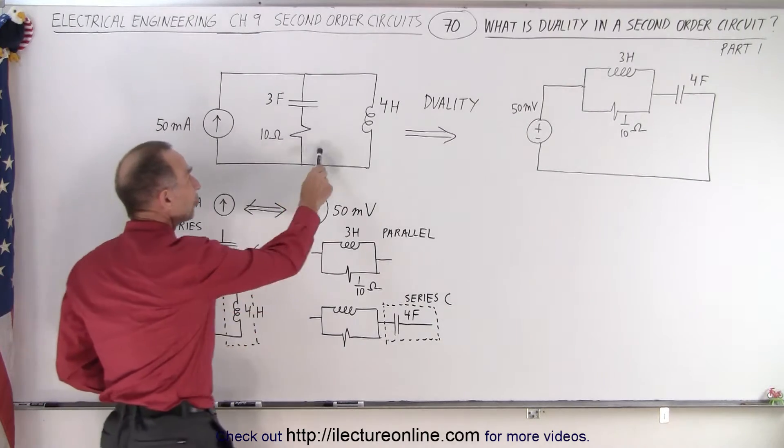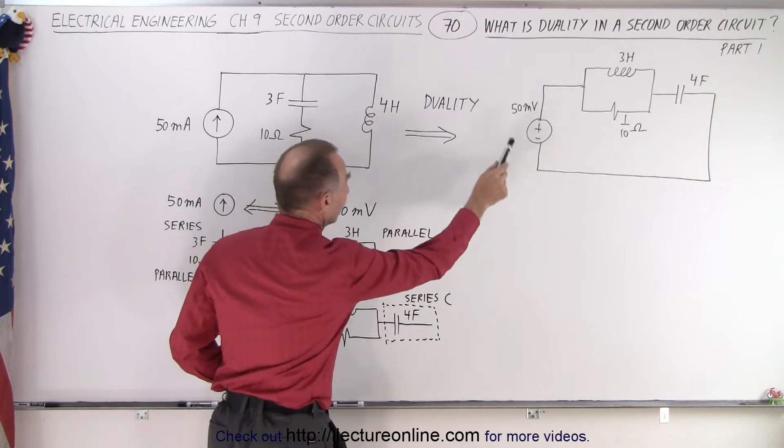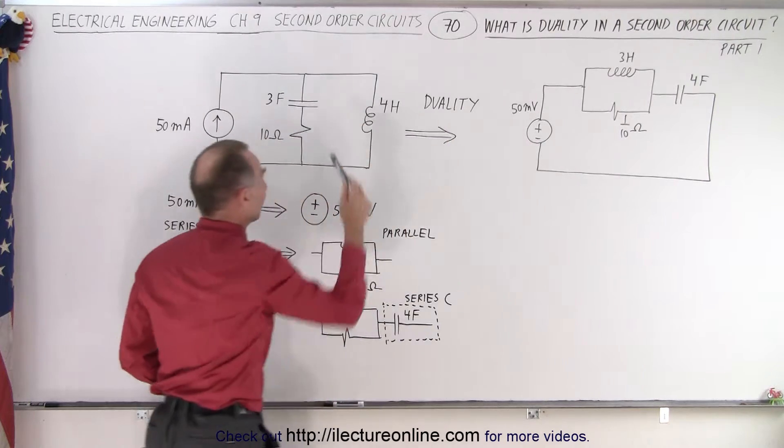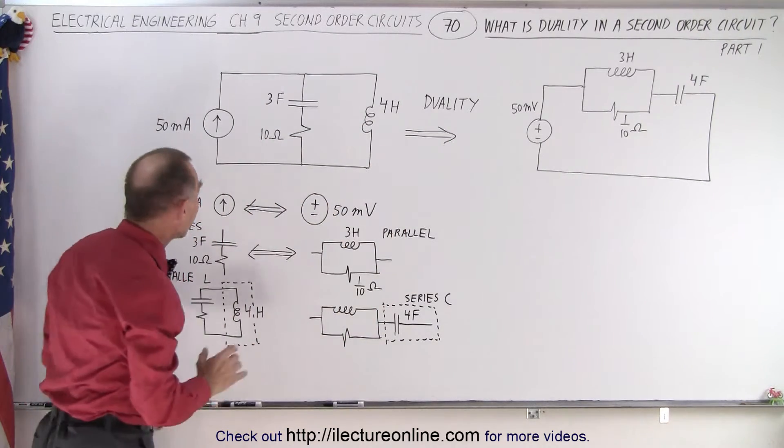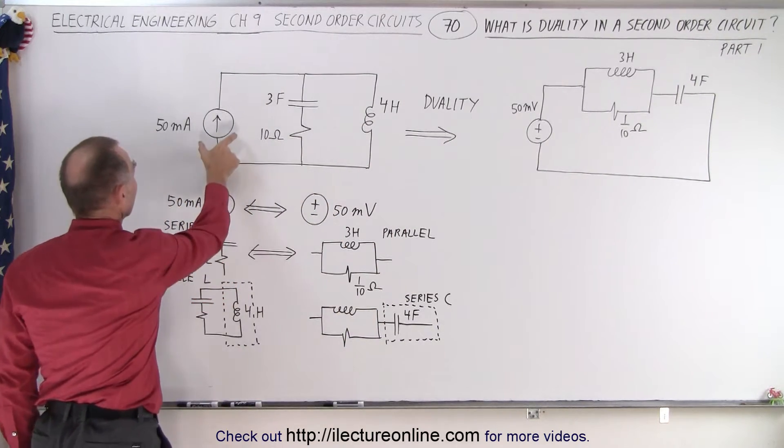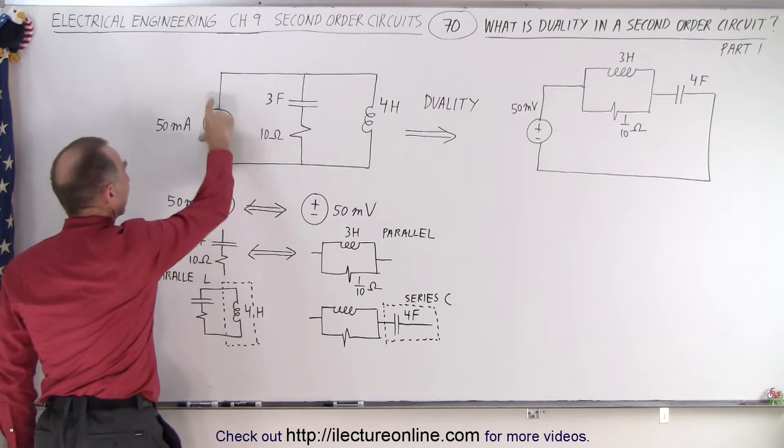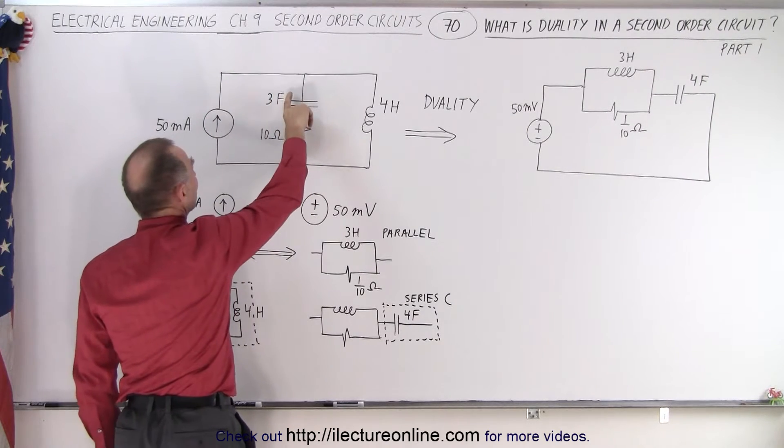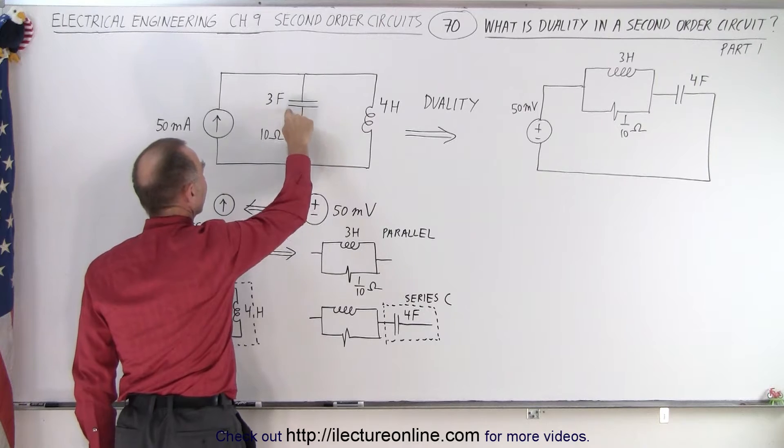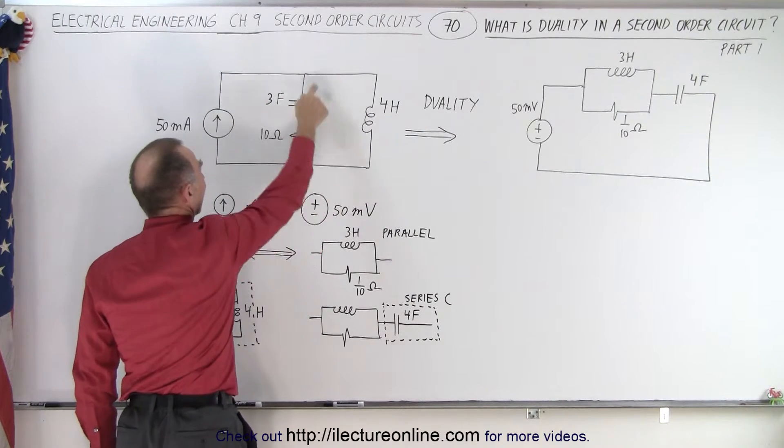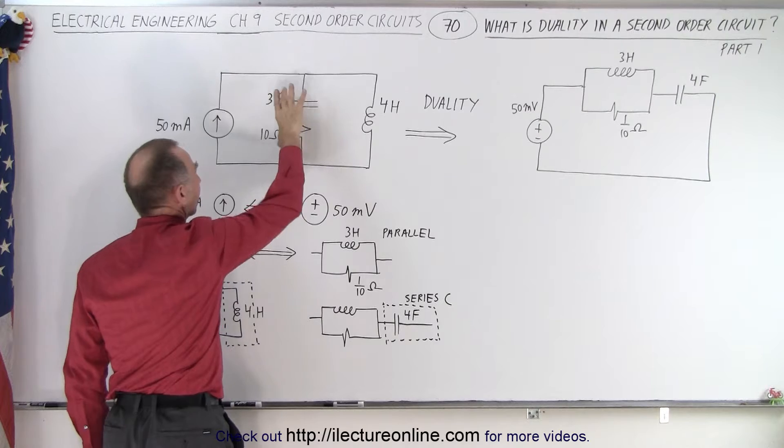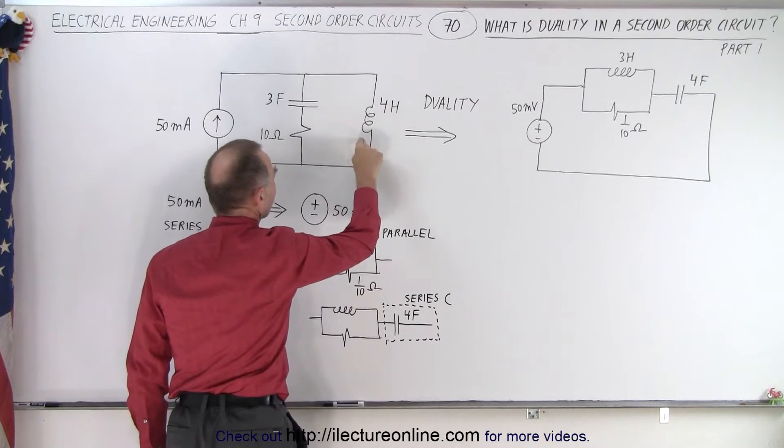It turns out that these are equivalent circuits. This is the duality circuit of our first one. So let's take a look. Here we have a circuit that has a current source. It is connected to these two components, a capacitor and a resistor in series. And this set of components in series are connected in parallel to the inductor.